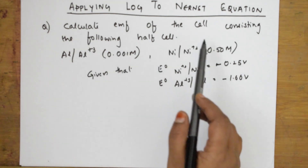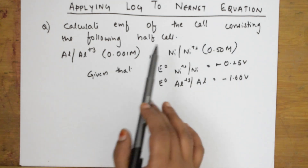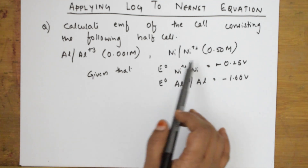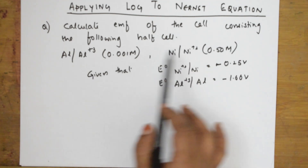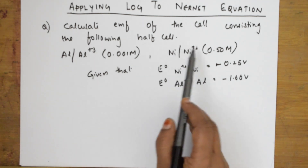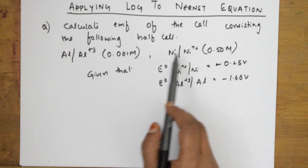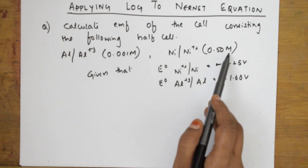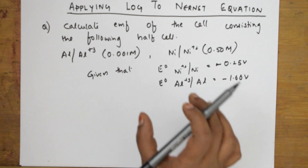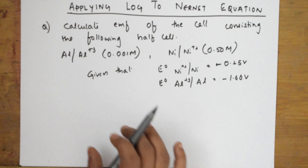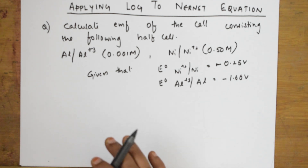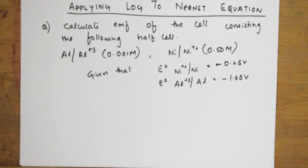Let us solve the simplest numerical first. Calculate the EMF of the cell consisting of the following half cells. One half cell is aluminium to Al³⁺, which is the oxidation reaction. The other is nickel to Ni²⁺, which is the reduction reaction. Molar concentrations and electrode potentials are given. We'll apply these to the Nernst equation using yesterday's log trick without log tables.